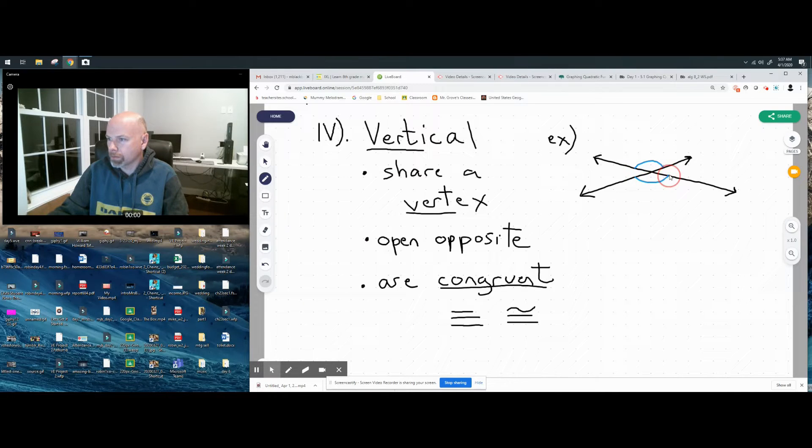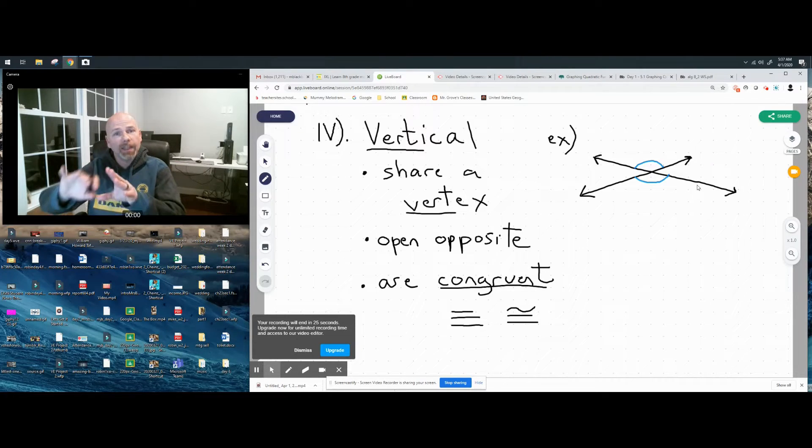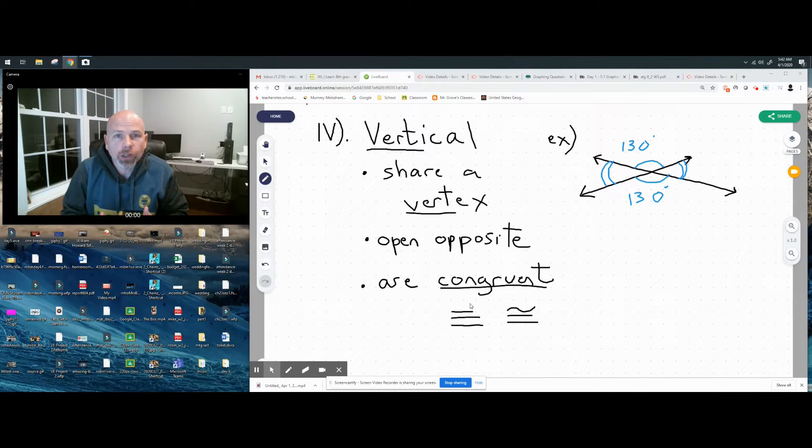And you can see how this makes four angles: one, two - so those are vertical. They share this vertex and you can see they open opposite. These are also vertical, the left and the right. They're exactly the same. So we know if this is 130 degrees, so is this, because they are congruent.